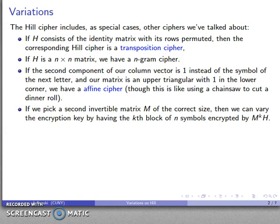And then finally, if I take a second invertible matrix, m, of the correct size, I can produce a polyalphabetic cipher by using this second matrix as a factor of the matrix that I'm going to be using for the actual encryption. So let's take a look at how these variations work.